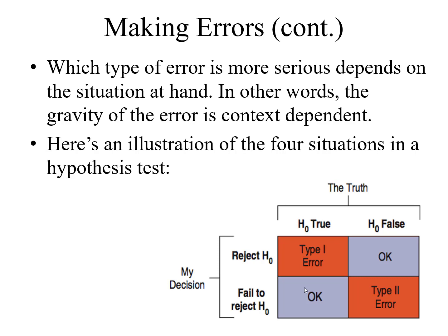There are four situations in a hypothesis test. If the null hypothesis is true but we reject it — for example, you reject a good quality production and say the production is not good — this is called a type 1 error. If you fail to reject it and the products are good, that is a correct decision. But if the product is defective, the person is guilty, and you fail to consider that person guilty — meaning you consider them innocent — this is called a type 2 error.